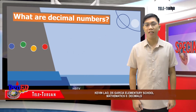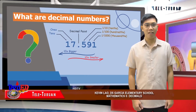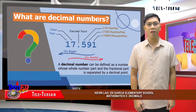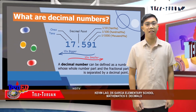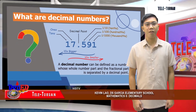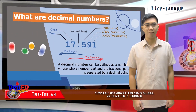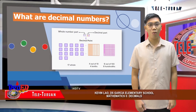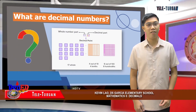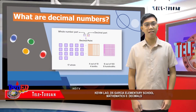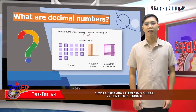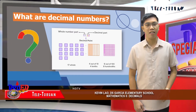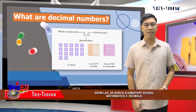Do you know what a decimal number is? A decimal number can be defined as a number whose whole part and fractional part is separated by a decimal point. Decimal comes from the Latin word decimus, meaning ten, from the root word decim, or ten. The decimal system, therefore, has ten as its base and is sometimes called a base-ten system.